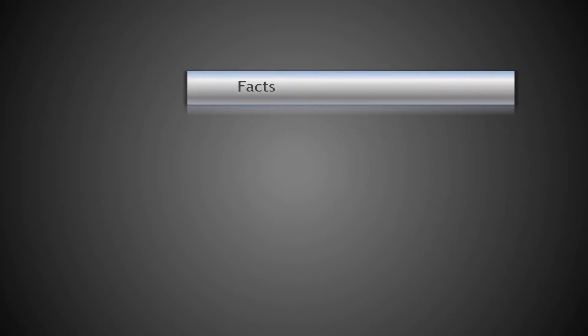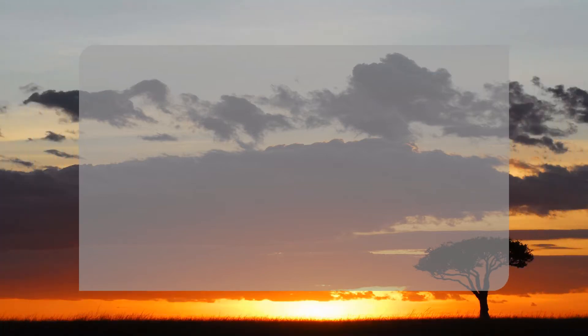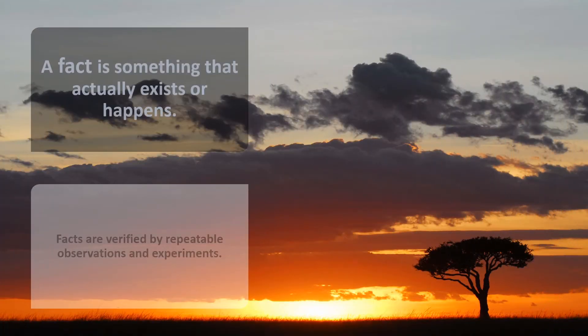Let's begin with facts. Here's how we can define a fact: it is something that actually exists or happens. Facts are verified by repeatable experiments and observations. You might be entitled to your own opinions, but you're not entitled to your own facts. Facts are immutable — they're the same everywhere. Like the sun will rise in the east and set in the west. Those are facts.